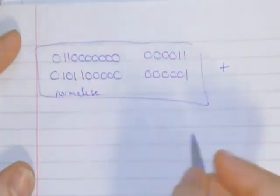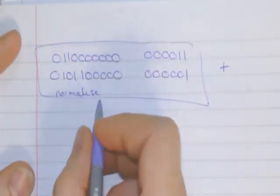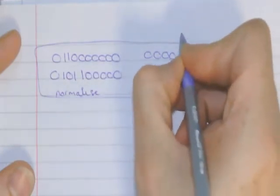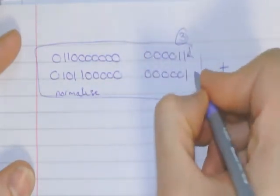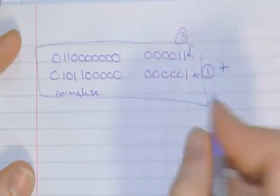Alright, so I'm going to normalize that, and what I should end up with is that's going to move 3, and it's positive, that's going to move 1. So I've got my exponent and my mantissa.